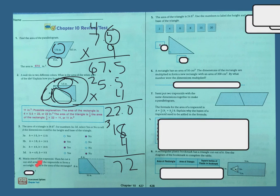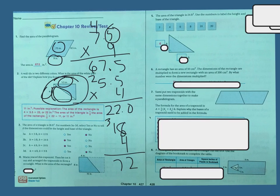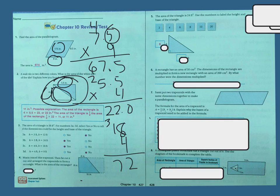Mario traced this trapezoid. Then he cut it out and arranged the trapezoids to form a rectangle. What is the area of the rectangle? Well, kind of tricky. This is 10 inches and that's 8 inches, but that doesn't go all the way over to the end. So we really need to figure out what that one little end piece is. Since this is in fact two trapezoids, one there and one there, presumably the same sizes, we can find the area of this first trapezoid and then just multiply that by 2.